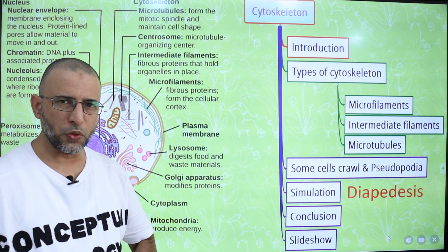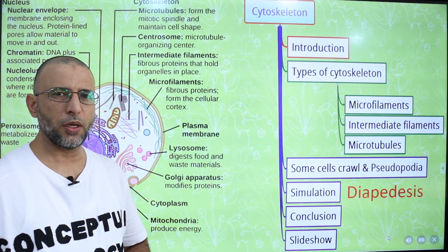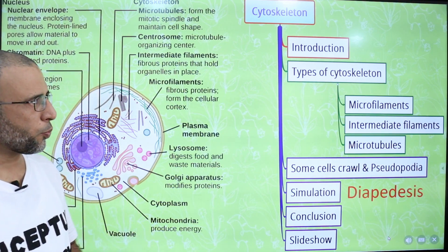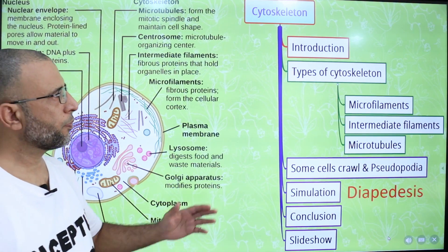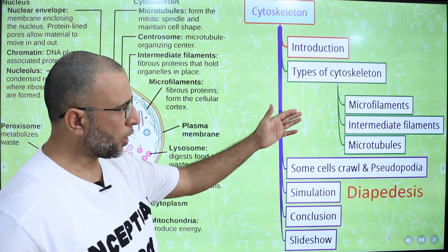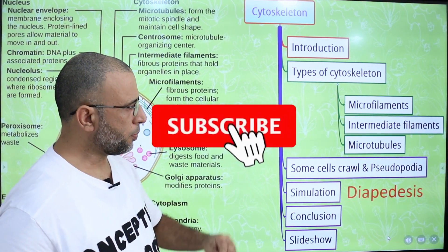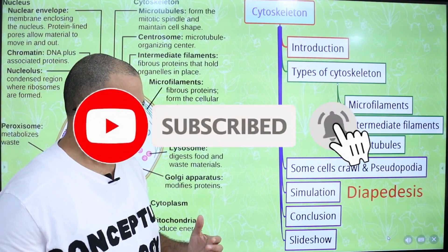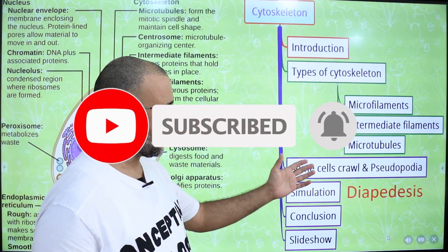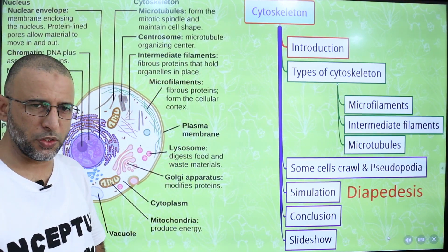Hi, I am Sohail. Today I am going to talk about structure and composition of cytoskeleton. Main points of the lesson are types of cytoskeleton: microfilaments, intermediate filaments, and microtubules. In this lecture we are going to talk about cells crawling and pseudopodia formation as well as diapedesis.